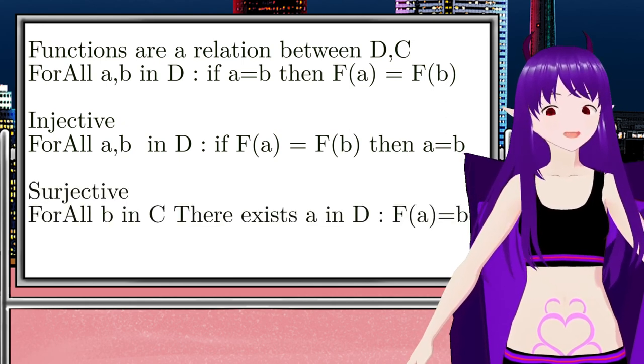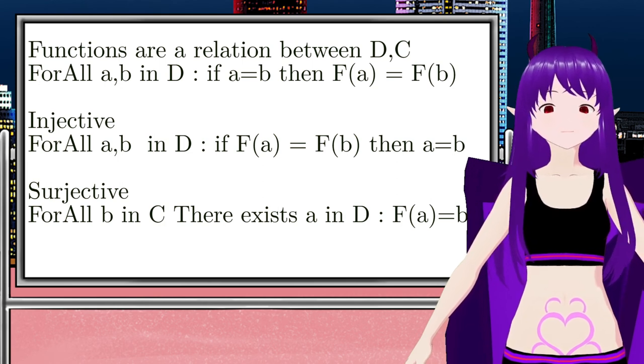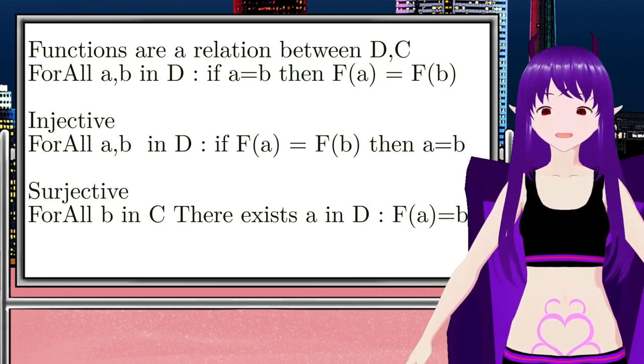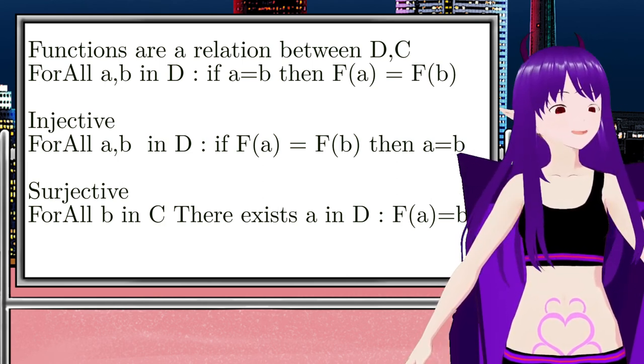If every element in the codomain has at least one domain element going to it, then it is a surjective function.